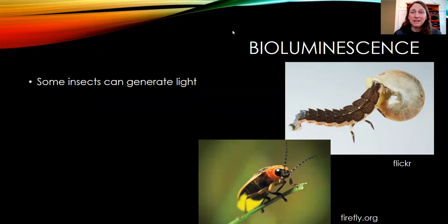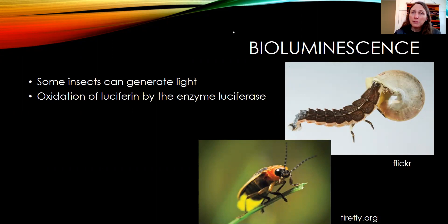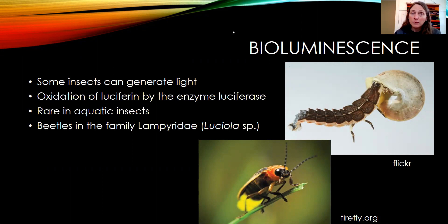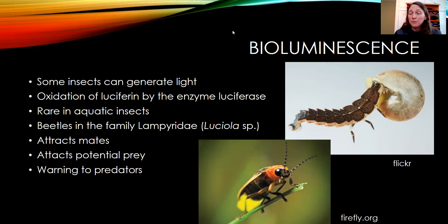Finally, some insects can generate light through bioluminescence. The typical pathway is the oxidation of luciferin by the enzyme luciferase. This tends to be rare in aquatic insects partly because light doesn't travel far underwater, making it a poor signaling mechanism. However, beetles in the family Lampyridae — the luciola beetles — have aquatic larval stages that do generate light. As adults we know them as fireflies, which are actually beetles, not flies. They use bioluminescence to attract mates, attract potential prey, and some may use it as a warning to predators. That concludes photo reception.